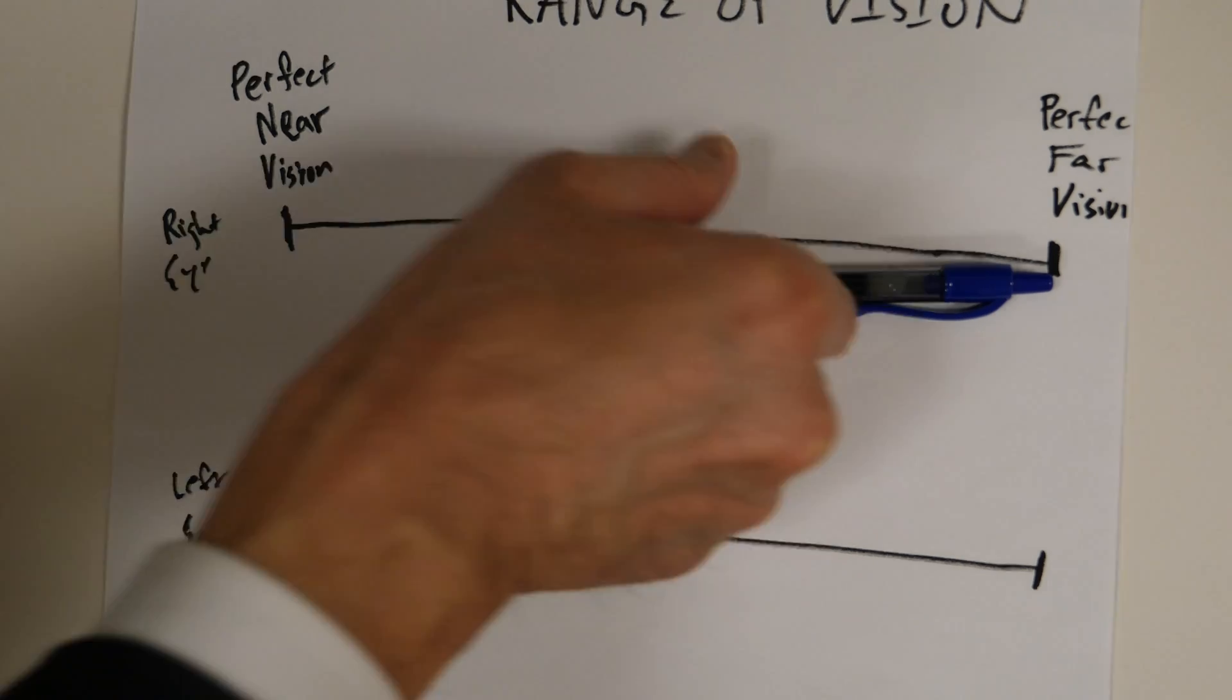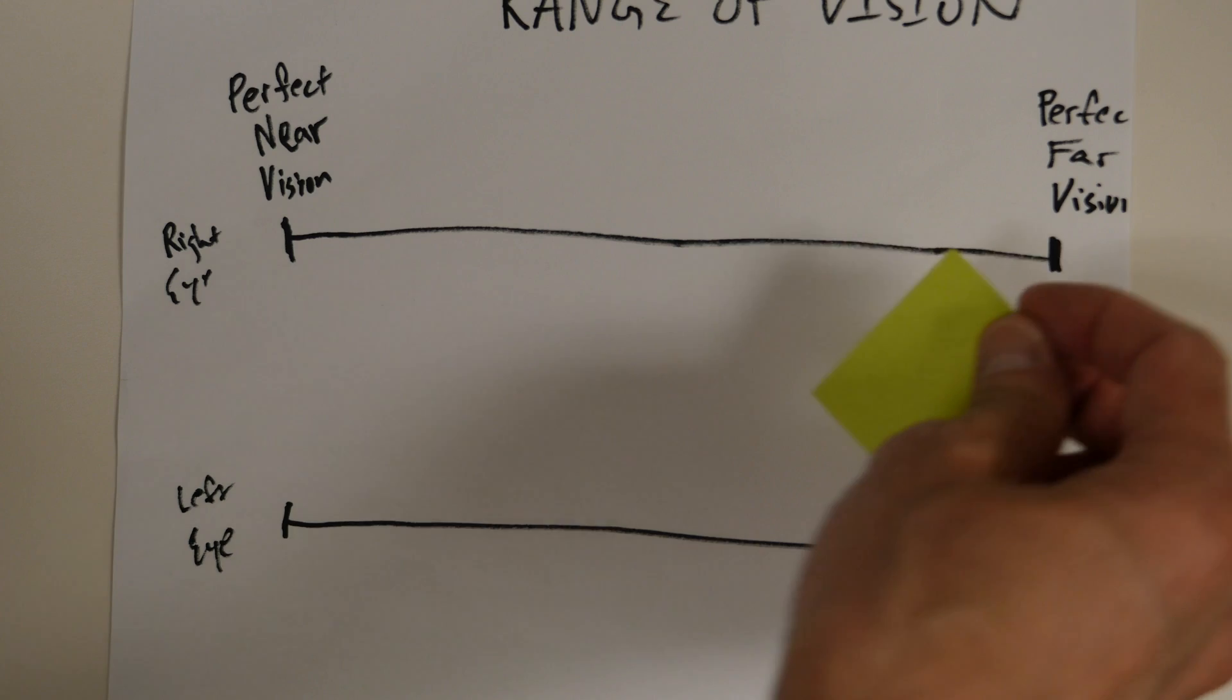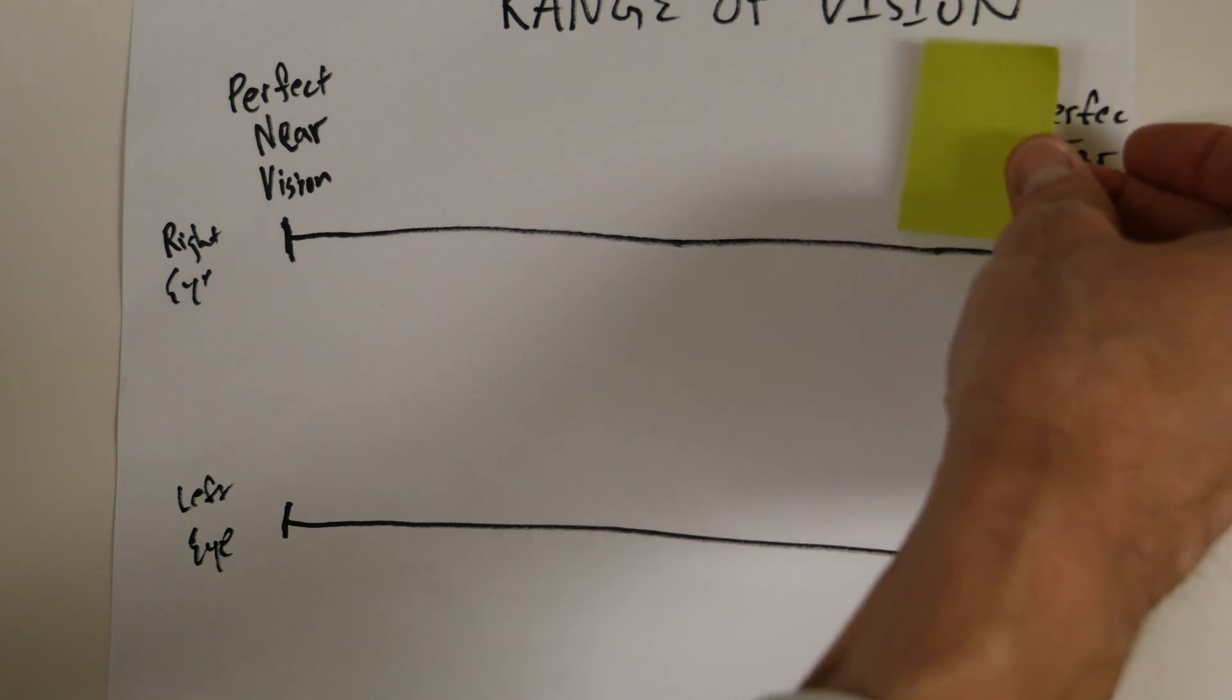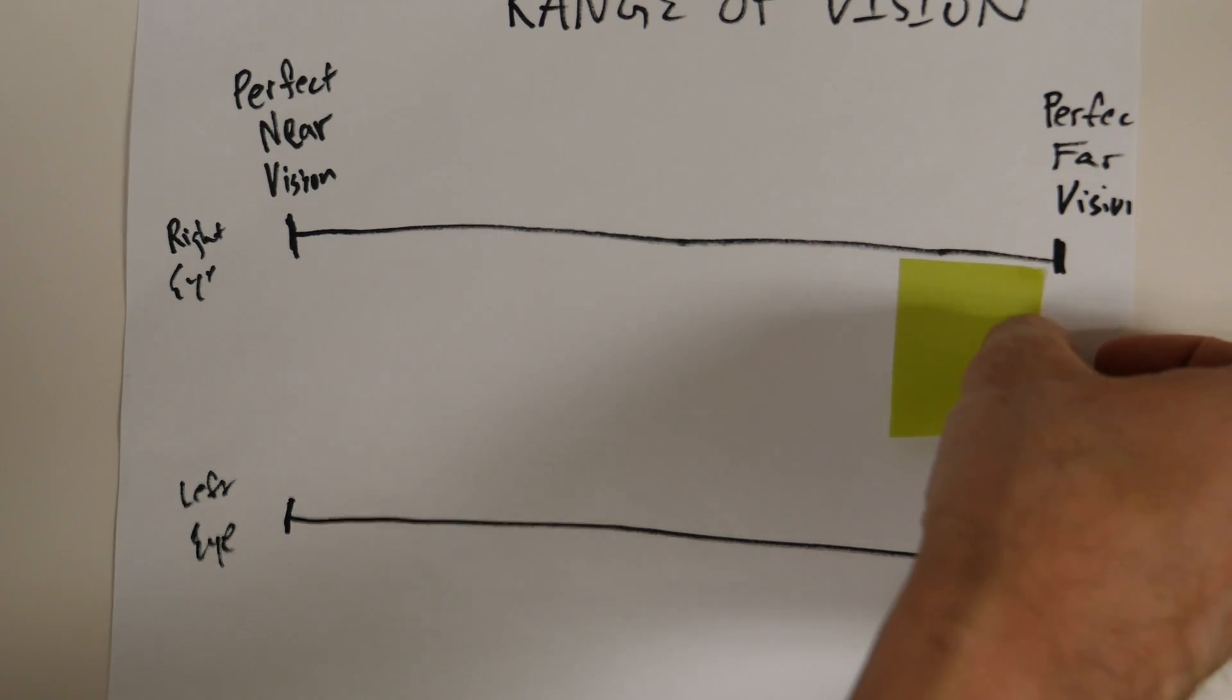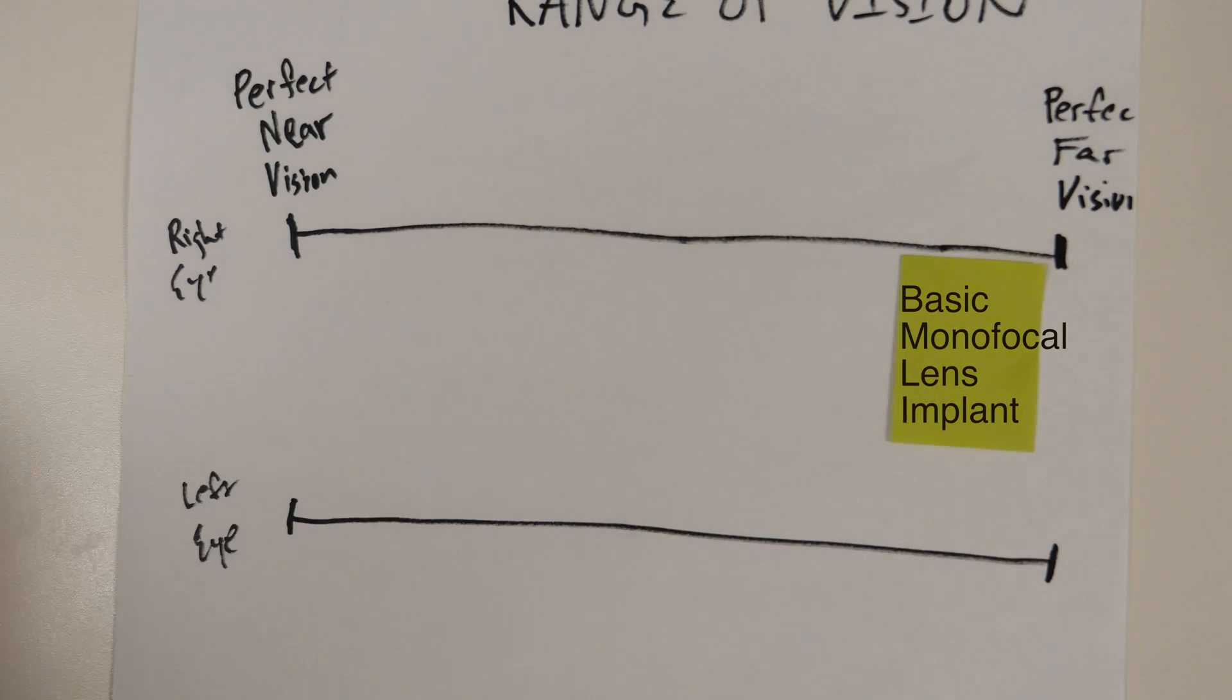On the other hand, if we just give you a basic lens, you will have this kind of range of vision. You have very good far vision, but you won't have any near vision.